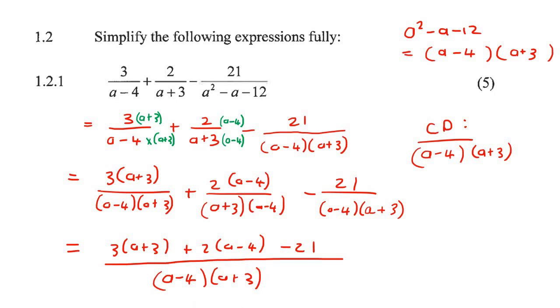And then now in the next step, we're just going to go clean up the top part, but we don't multiply out the bottom part. So at the top, we're going to have 3a plus 9 plus 2a minus 8 minus 21 over the denominator, which we don't multiply out. That's a minus 4 and a plus 3.